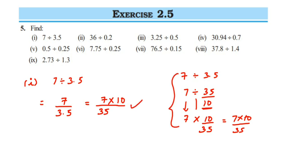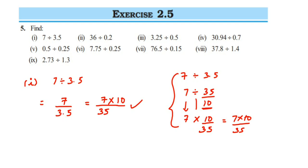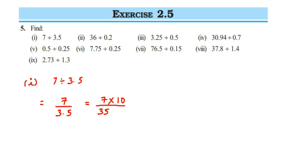A simple rule to remember: if you have a decimal in the denominator, the 10, 100, or 1000 will come to the numerator. If you have a decimal in the numerator and want to remove it, the 10, 100, or 1000 comes to the denominator. So removing the decimal from the denominator puts 10 in the numerator. This gives 70 upon 35.